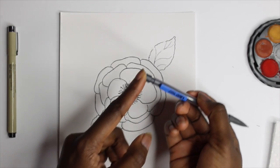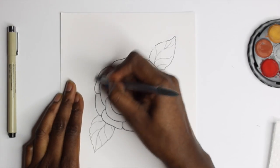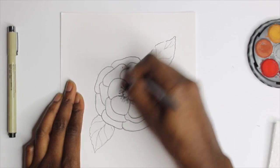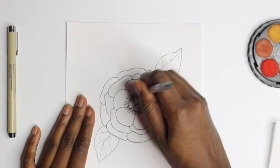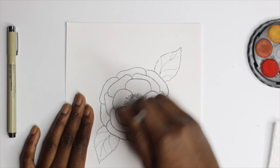So now that we're done using the pen, we're going to be using our eraser and we're going to remove all of those construction lines because we don't need them anymore, because we're going to be heading into the watercolor portion of this painting.